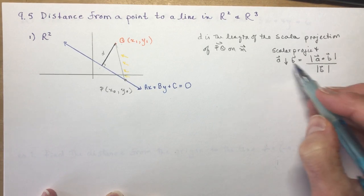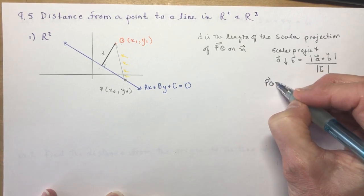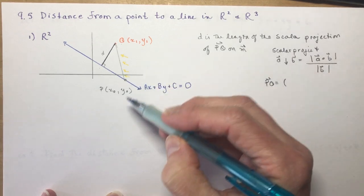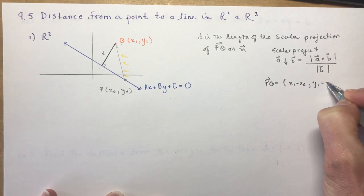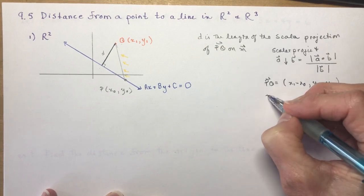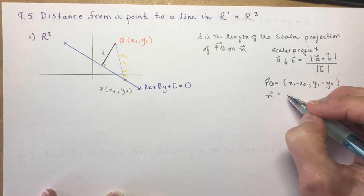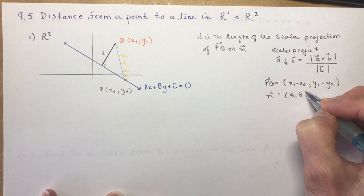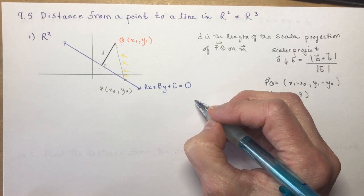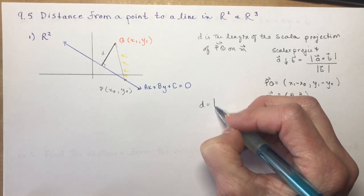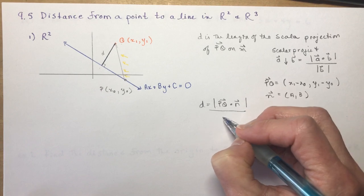So the length PQ — PQ is going to be Q minus P, so we have (x₁ − x₀, y₁ − y₀). And our normal, as you recall from the equation of the line, would be (a, b). So going back to the distance equation, the distance is going to be equal to the magnitude of PQ dotted with the normal, over the magnitude of the normal.